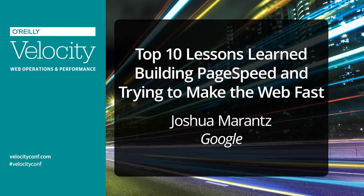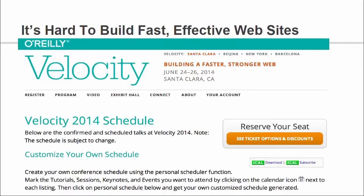It's hard to build websites today, case in point, the velocity schedule from today, particularly on mobile. Has anybody been trying to use the schedule on their mobile phone to try and figure out what to go to next?